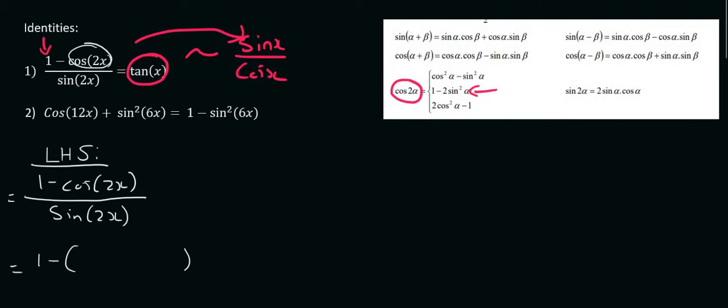We're going to replace that cos2x with one minus two sin squared of x. Then at the bottom you see how it's sin2x. You always want to expand that using this one but that's a nice one because it only has one option so it's easy to choose.